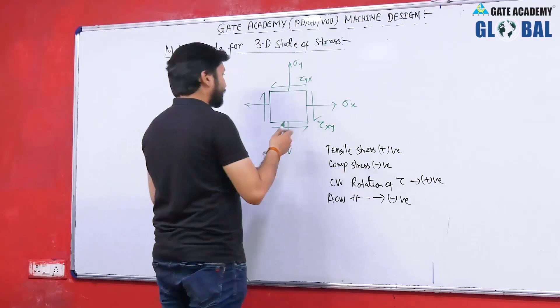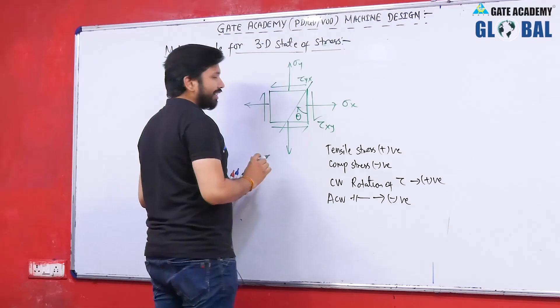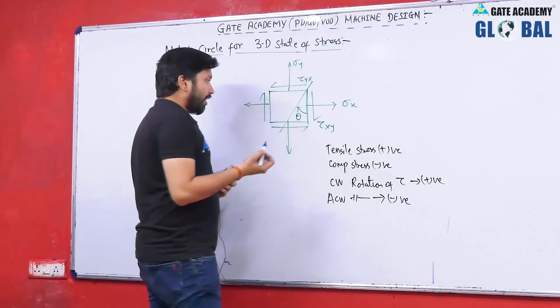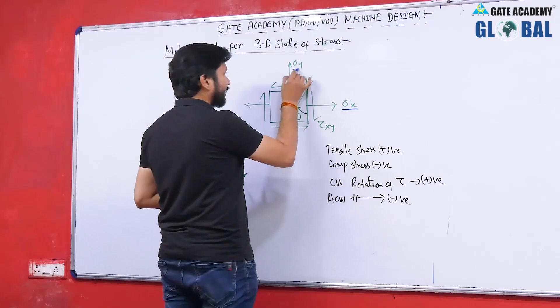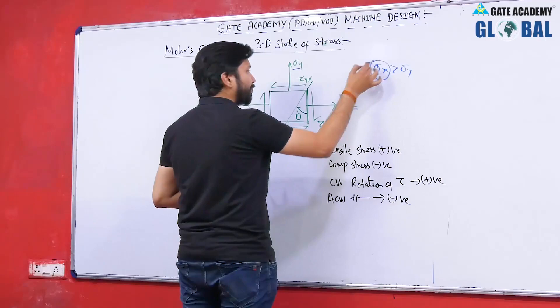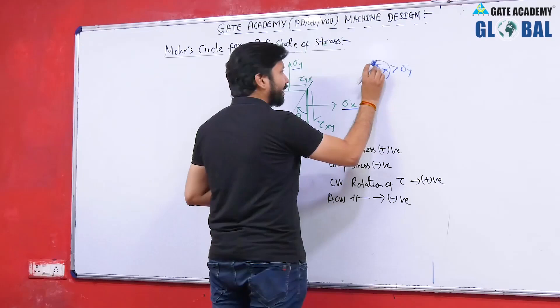Now the sign convention for the location of the oblique plane, theta: if theta makes a clockwise angle with respect to the reference plane, theta is taken as positive. If theta is measured in an anti-clockwise manner with respect to the reference plane, it is taken as negative. The reference plane is the plane which carries the higher value of normal stress. If sigma x is higher than sigma y, then the x plane is taken as the reference plane.